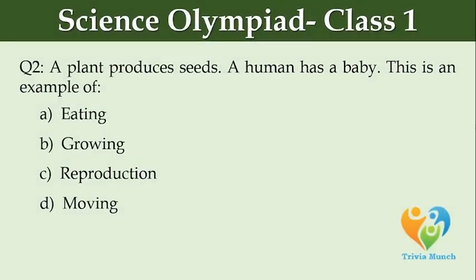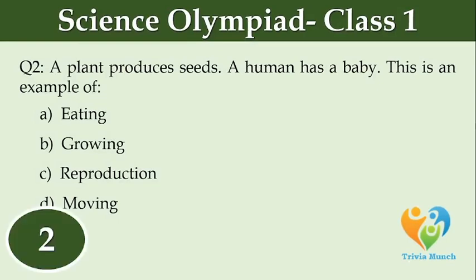A plant produces seeds. A woman has a baby. This is an example of dash. Option A: Eating. Option B: Growing. Option C: Reproduction. Option D: Moving.